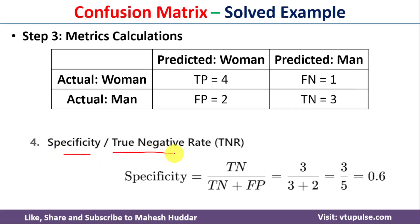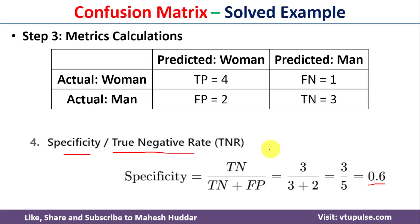Finally we calculate the true negative rate, also known as specificity. It is calculated as true negative divided by (true negative + false positive), which equals 3 divided by (3 + 2) = 3/5 = 0.6. This is how we calculate accuracy, precision, recall, sensitivity, and specificity.